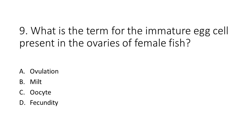Number 9. What is the term for the immature egg cell present in the ovaries of female fish? a. Ovulation. b. Milt. c. Oocyte. d. Fecundity.